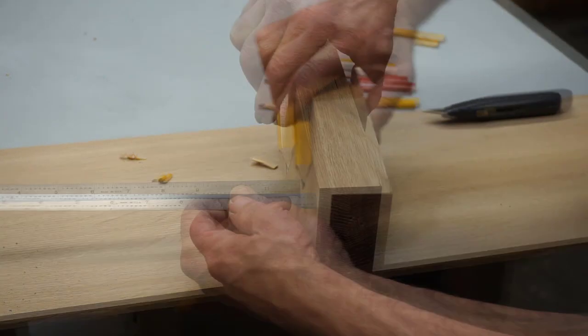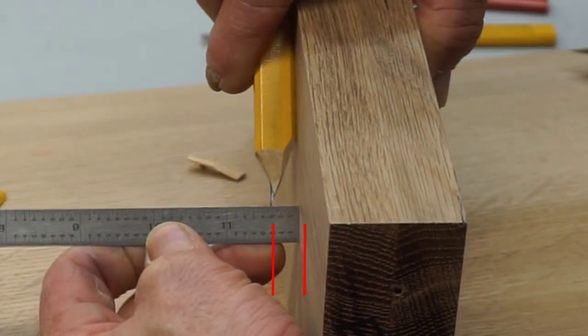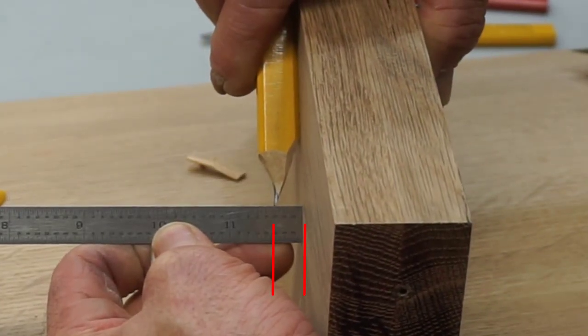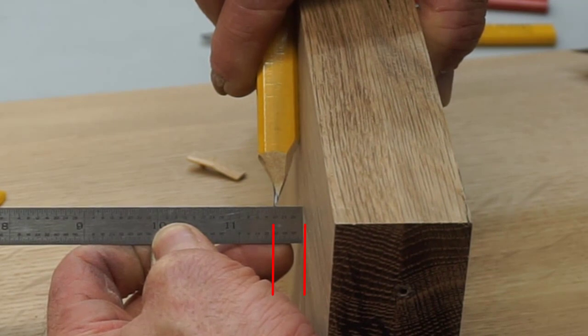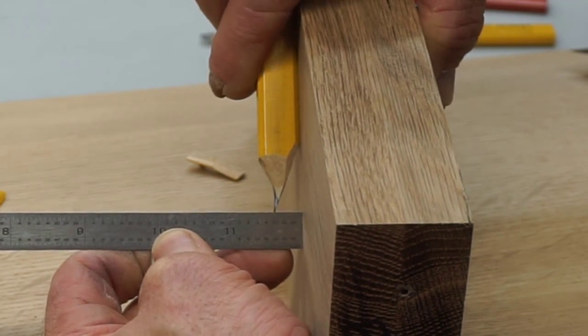Scribing the point in this way lets me easily get a three-eighths inch offset scribe without using an extra scribe block or anything. Sometimes it's just the ticket.